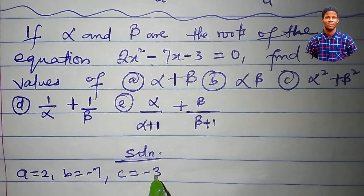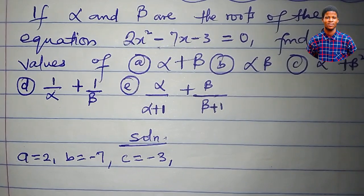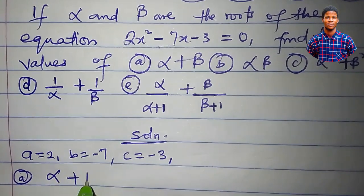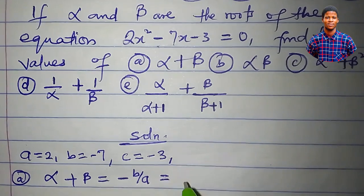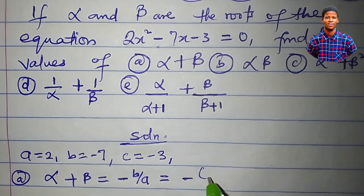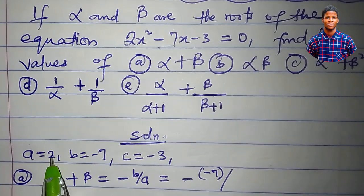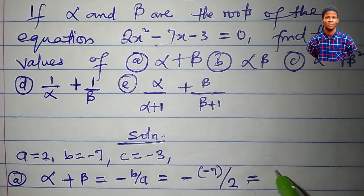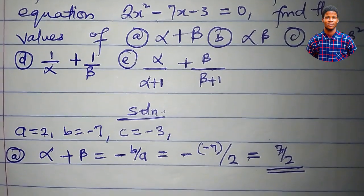If alpha and beta are the roots of this equation, then alpha plus beta is equal to minus b all over a, which is minus (minus 7) all over 2. Minus minus is plus, and that gives us 7 all over 2. So alpha plus beta is 7 over 2.